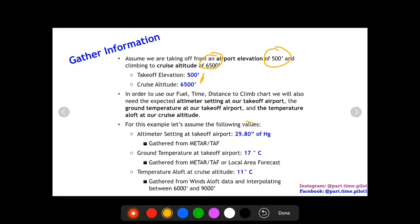For our altimeter setting in this example, let's assume 29.80 inches of mercury. Now this can be gathered from a METAR or TAF, and sometimes it's hard to find this information in a TAF. Sometimes your airport might not even have a TAF, so look for the closest airport nearby that would have the same type of weather close to the same type of weather that you would have at your airport.